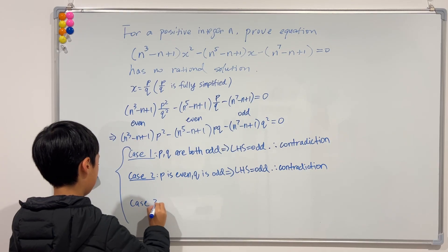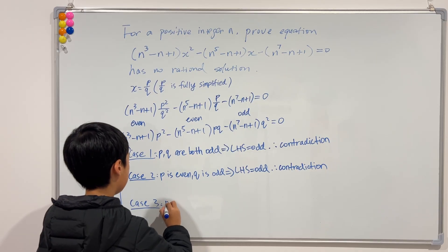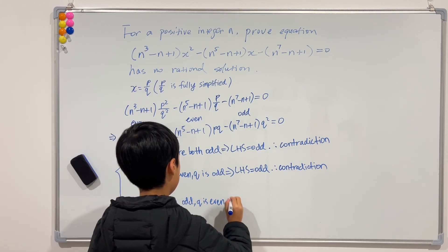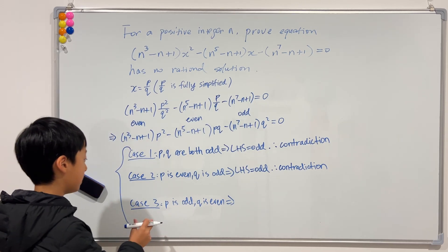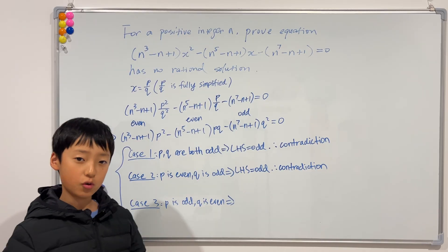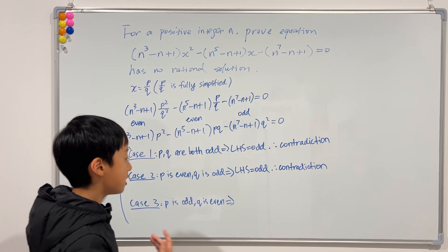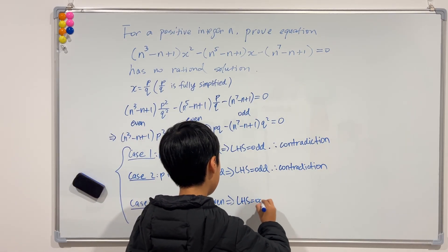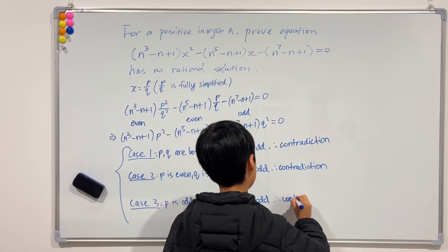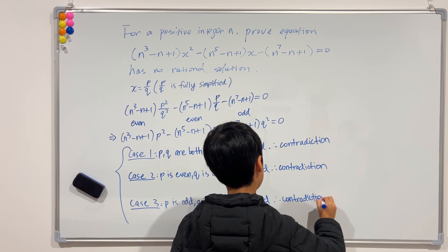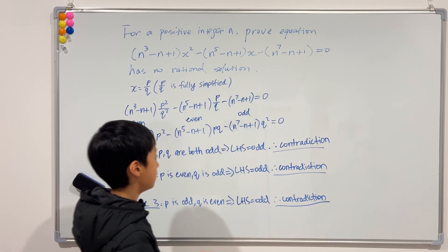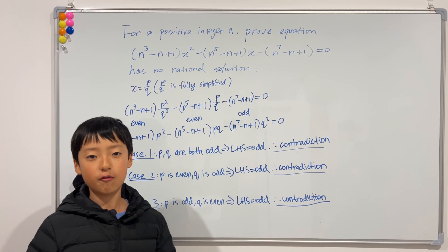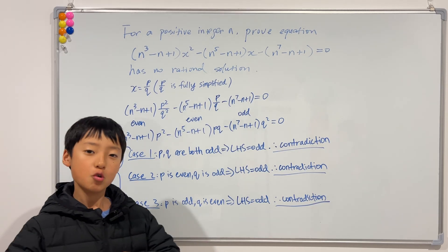Case 3: p is odd and q is even — just swapping around. We know that case 3 and case 2 are actually the same, because p and q are symmetric. So we get the same conclusions from case 2 as from case 3, meaning we still get the left-hand side being odd, and we still get a contradiction. Since all three cases contradict our original assumption — that this equation does have rational solutions — we have proved that it has no rational solutions.